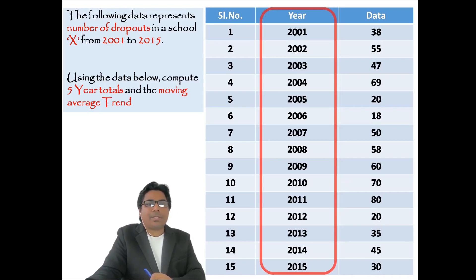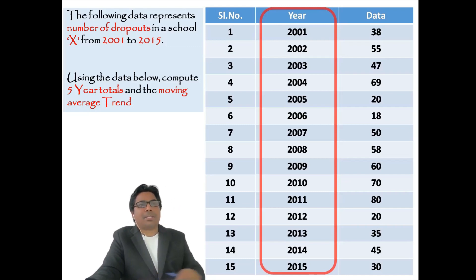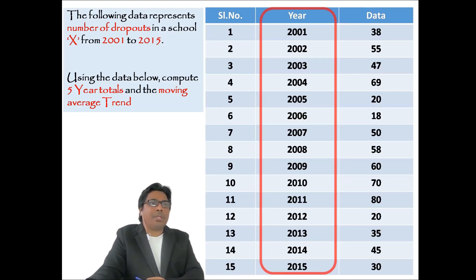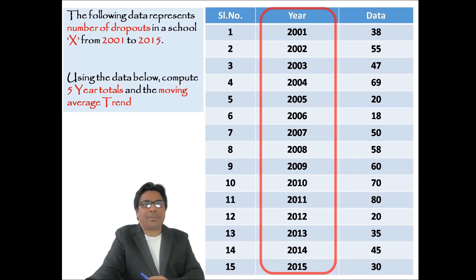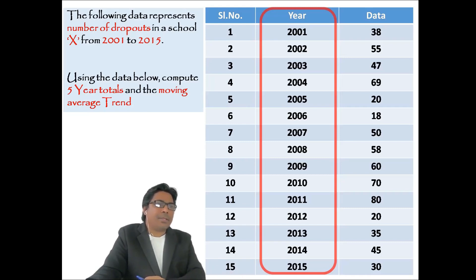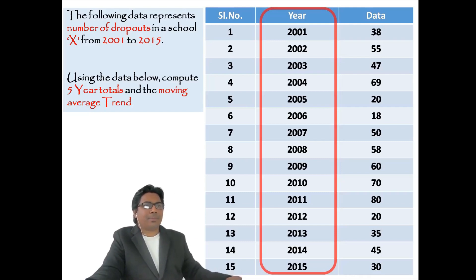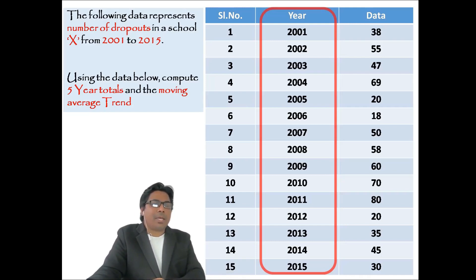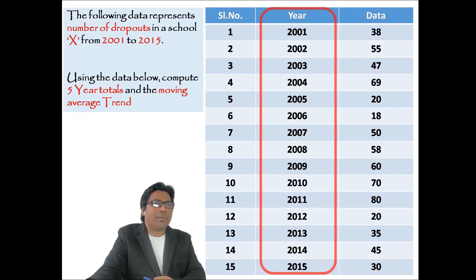The data fluctuates from year to year. This data could be yearly, monthly, daily, or weekly data. What we are trying to do here is find the average of five years using the moving average method. The reason we use this method is that the data fluctuates, and by finding the trend value it reduces the fluctuation and gives an average of the distribution.